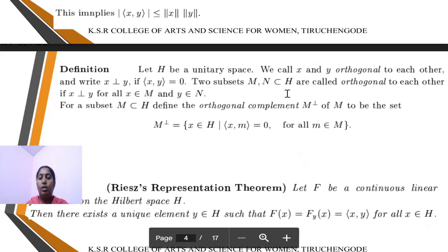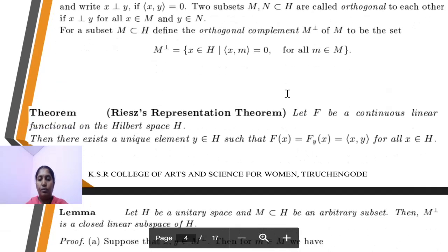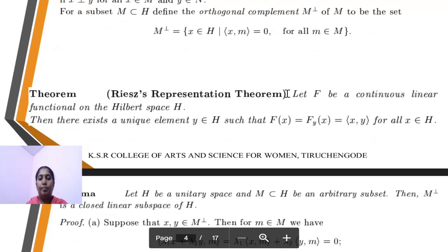Orthogonal complement, denoted by M⊥. The condition is: h belongs to H, ⟨h, m⟩ = 0 for all m belonging to capital M.